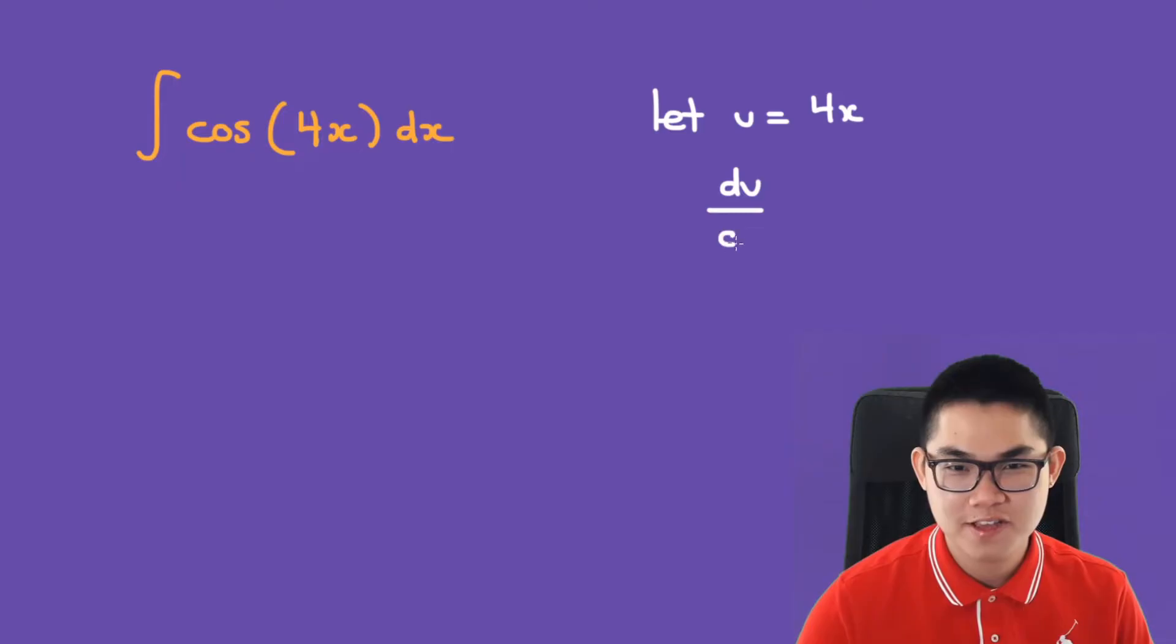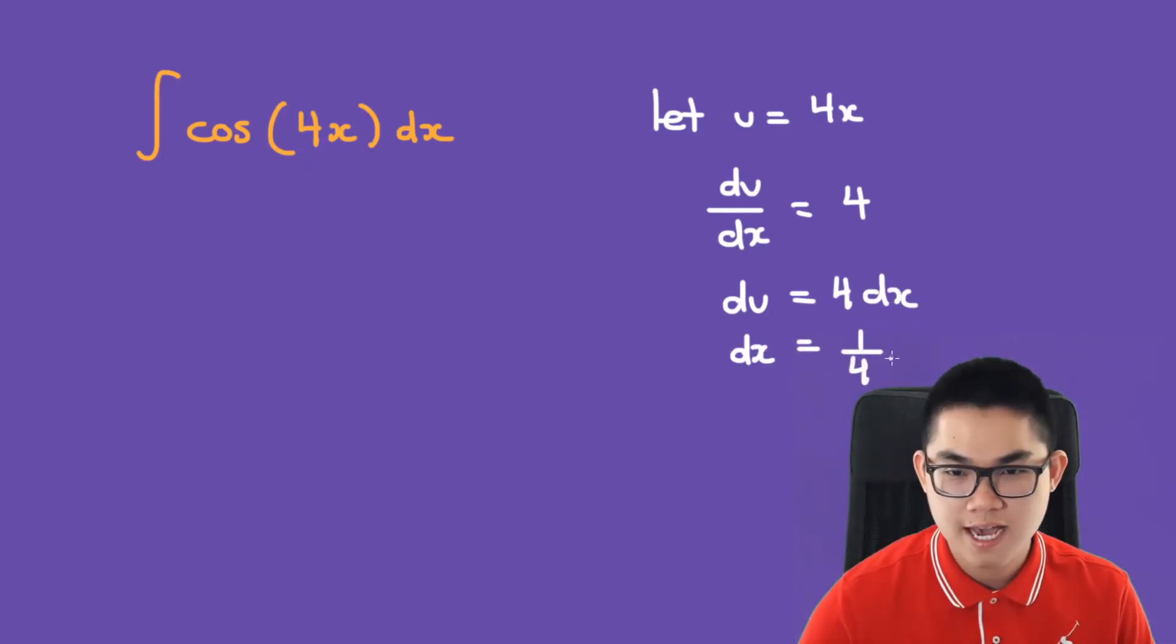What is the derivative du over dx? That's just going to be 4. So du is equal to 4 times dx. And dx is 1 over 4 times du.